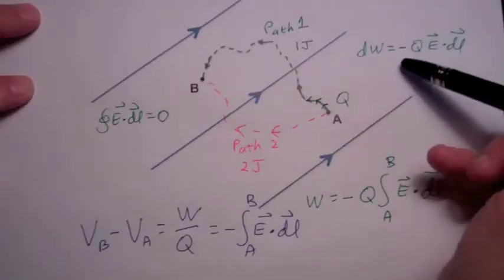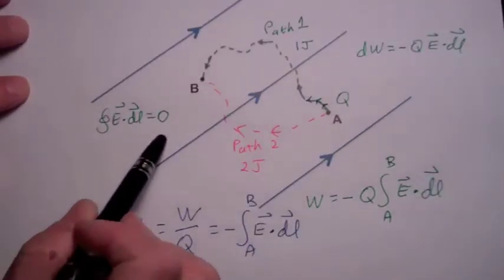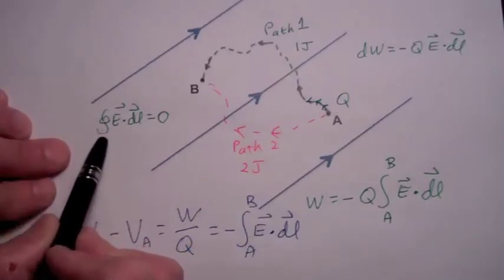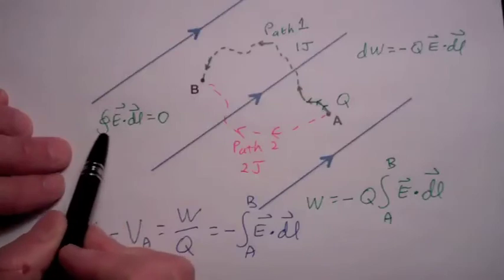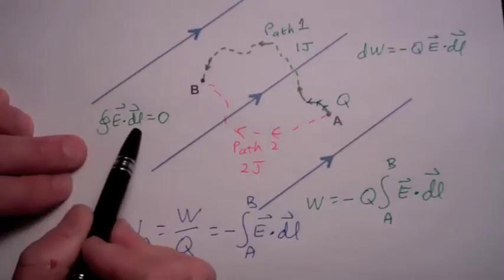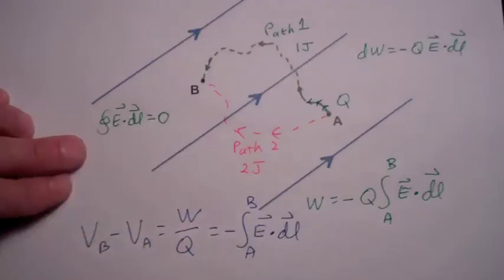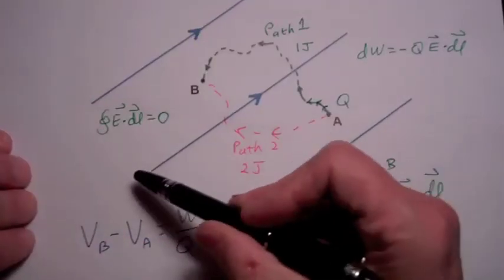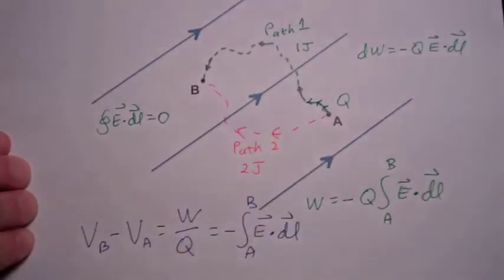A way we indicate path independence is by putting a small circle on the integral of E dot DL, which indicates we are doing the integral along a closed path and returning to our original position. In order for energy to be conserved, that closed line integral must equal zero.